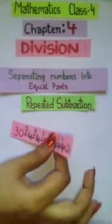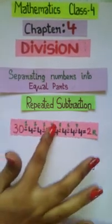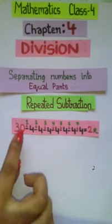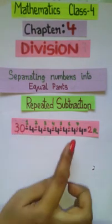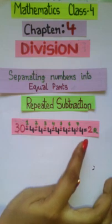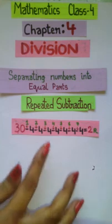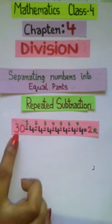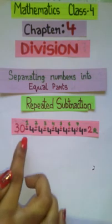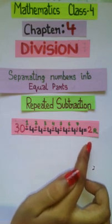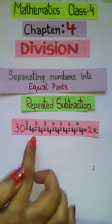For example, if we subtract the same number repeatedly from a large number until the remainder is 0 or the number smaller than the number being subtracted. Here I have taken 30 and have repeatedly subtracted 4 until the remainder is 2. So how many times did I subtract 4?